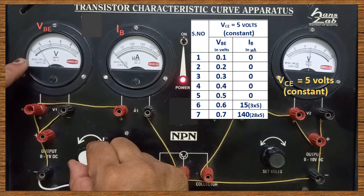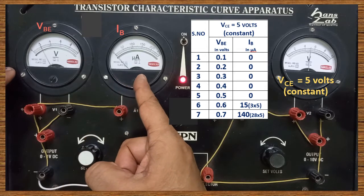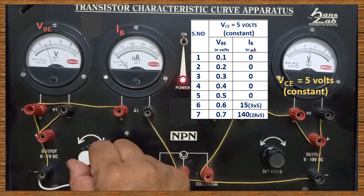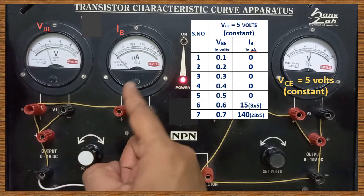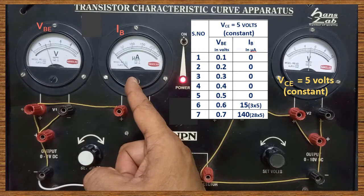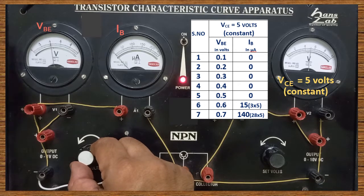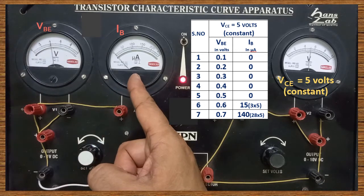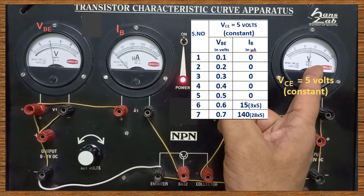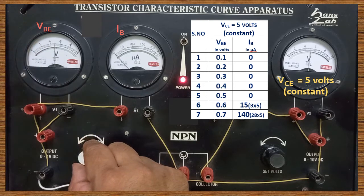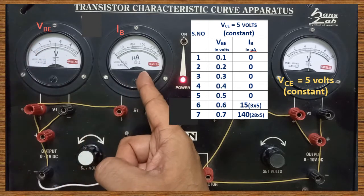Now VBE is increased from 0.1 to 0.2 volt — IB value is 0. Then increased from 0.2 to 0.3 volt — IB is still 0. Now the reading is increased from 0.3 volt to 0.4 volt. Without any parallax error, measure 0.4 volt and note the corresponding IB — it is 0. Also check that VCE is kept constant at exactly 5 volt. Now VBE is increased from 0.4 volt to 0.5 volt — IB is 0.